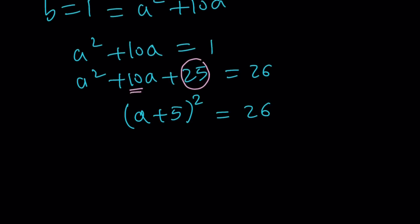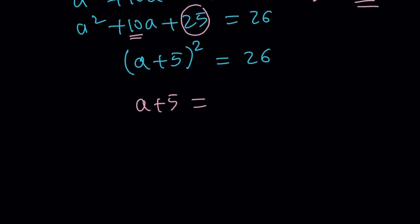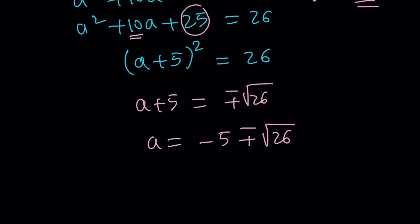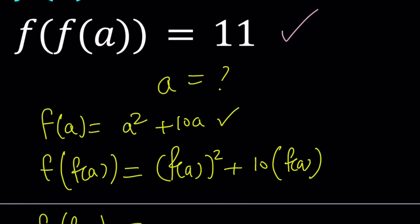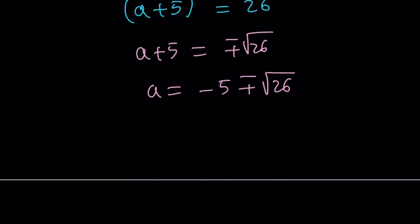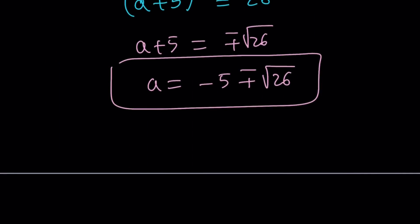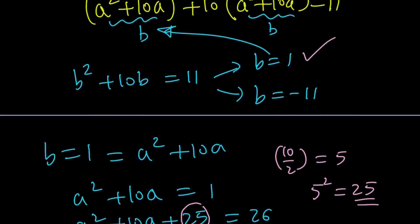So I add 25 to both sides. The left-hand side can now be written as a perfect square. From here we get two solutions by square rooting: a plus 5 equals plus or minus the square root of 26, so a equals negative 5 plus or minus the square root of 26. We are solving for a because the original problem gave us f of f of a. So these are two of the a values — let's box them and look at the other solution.